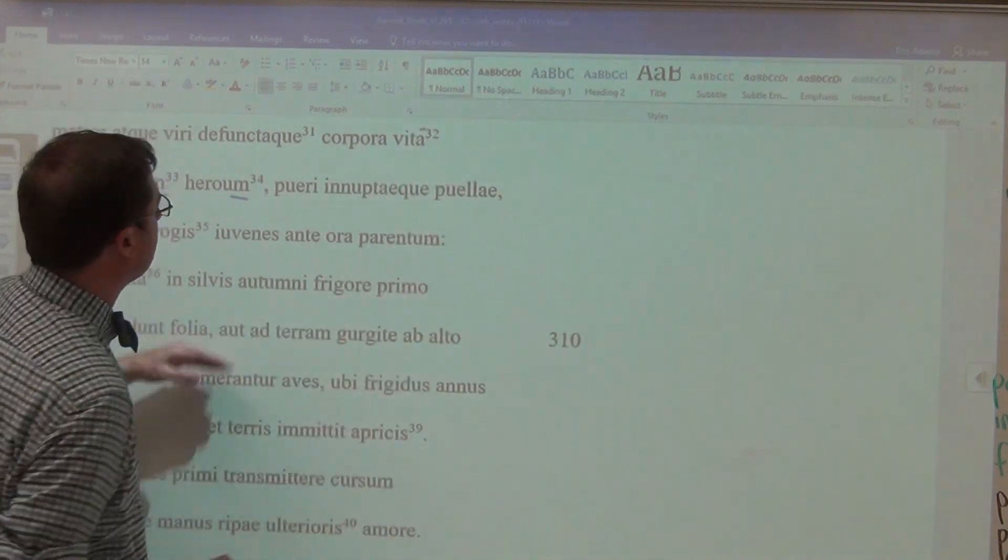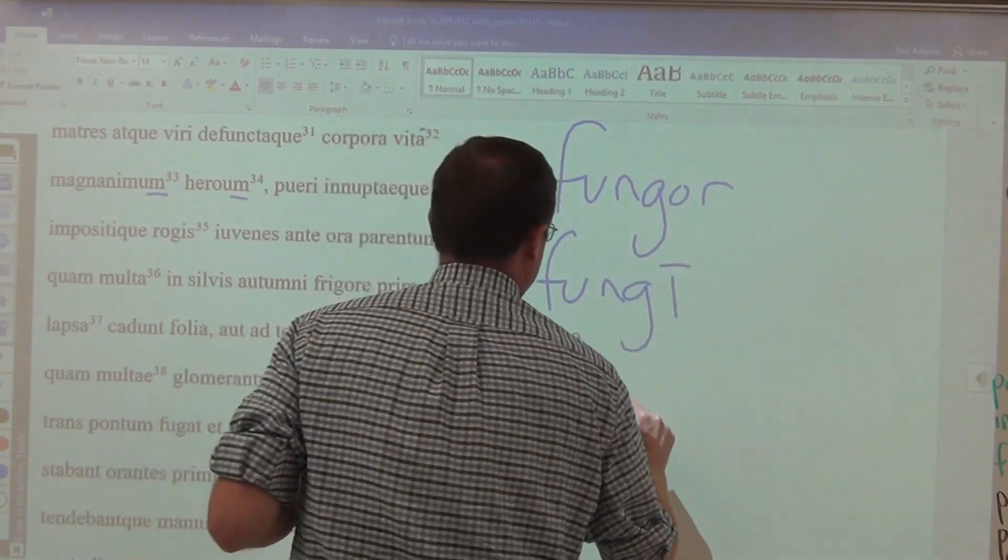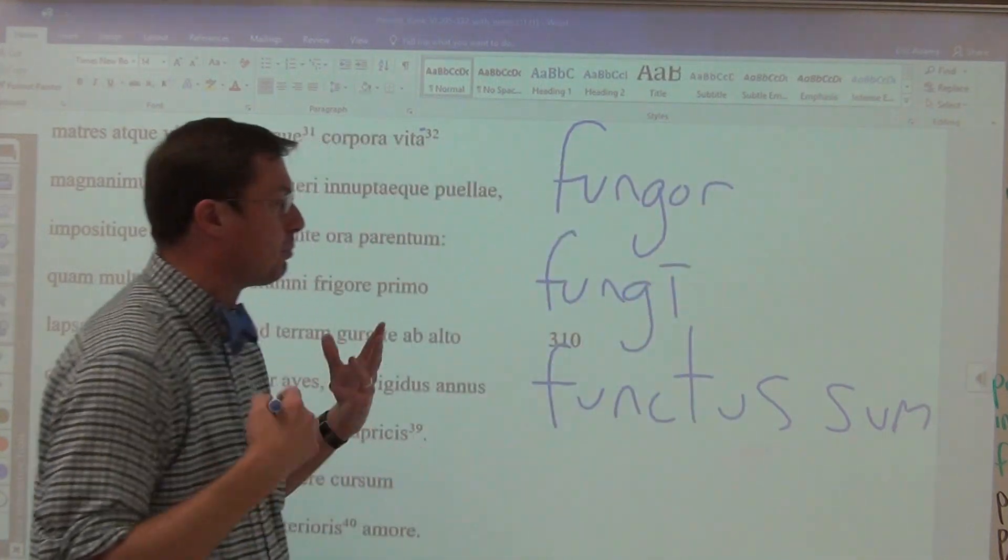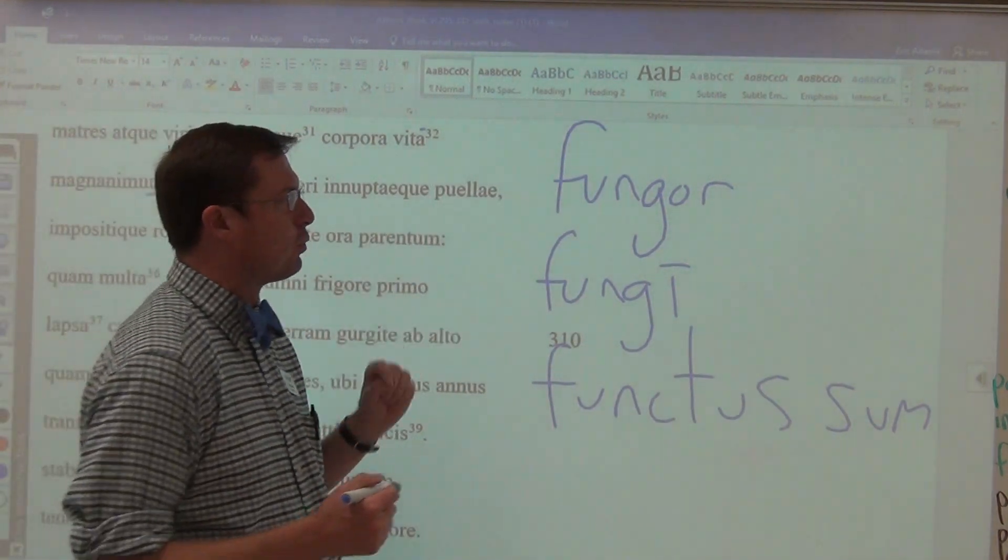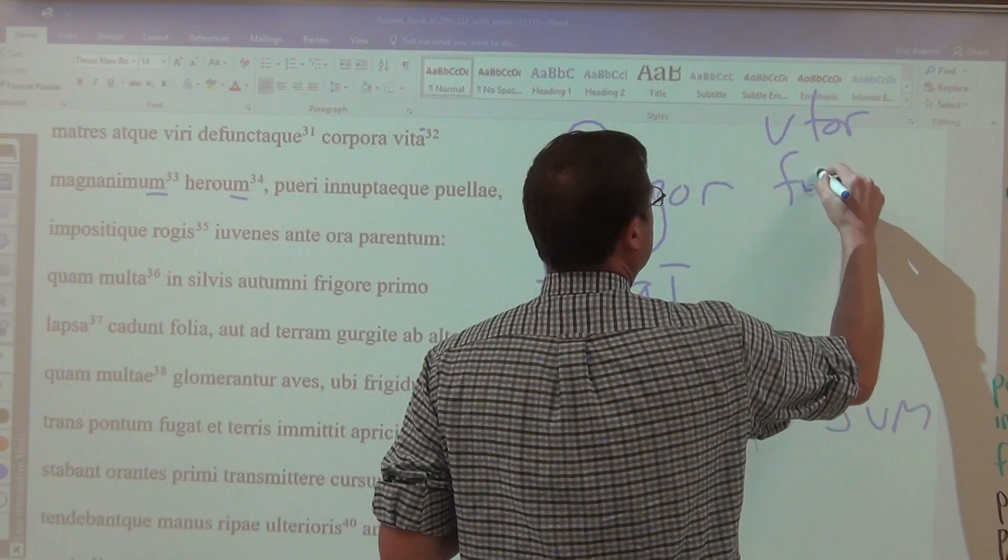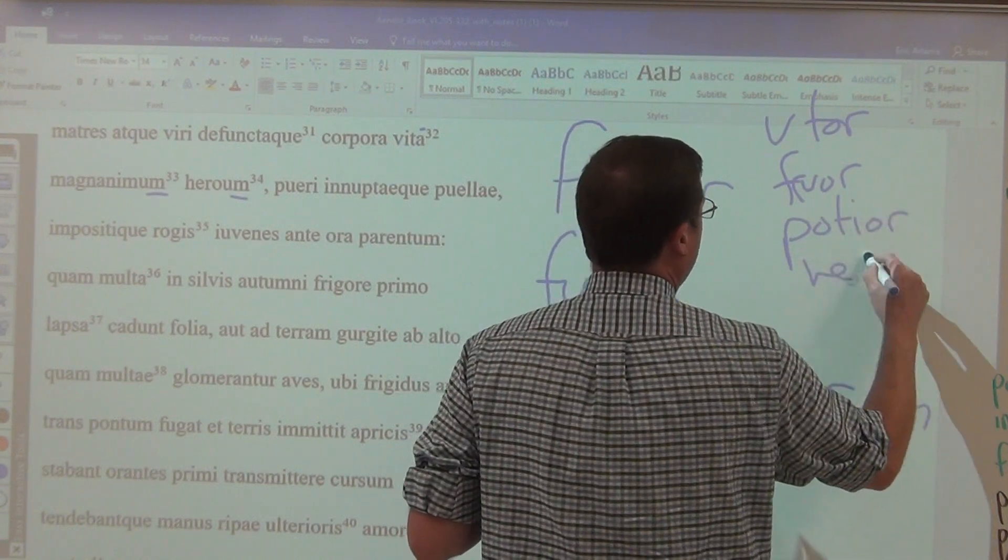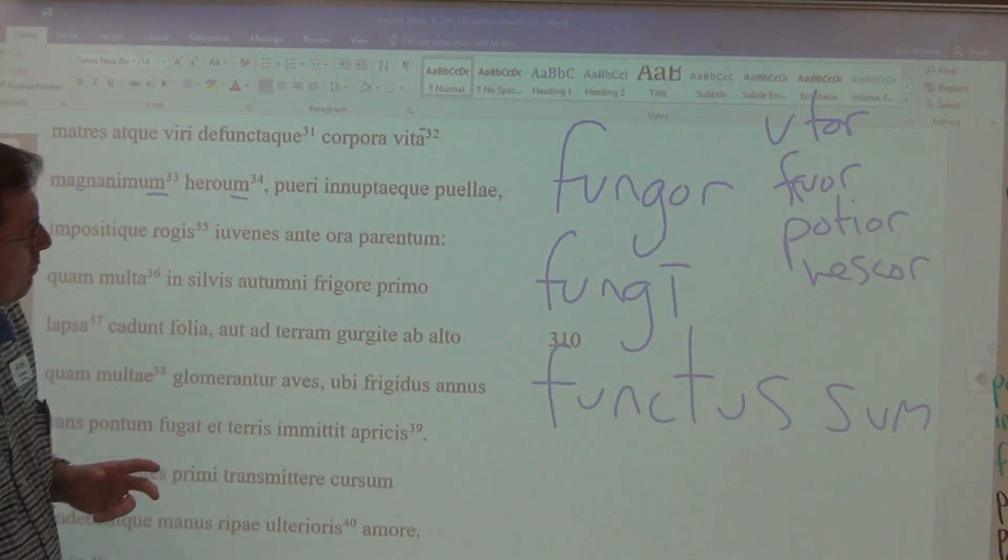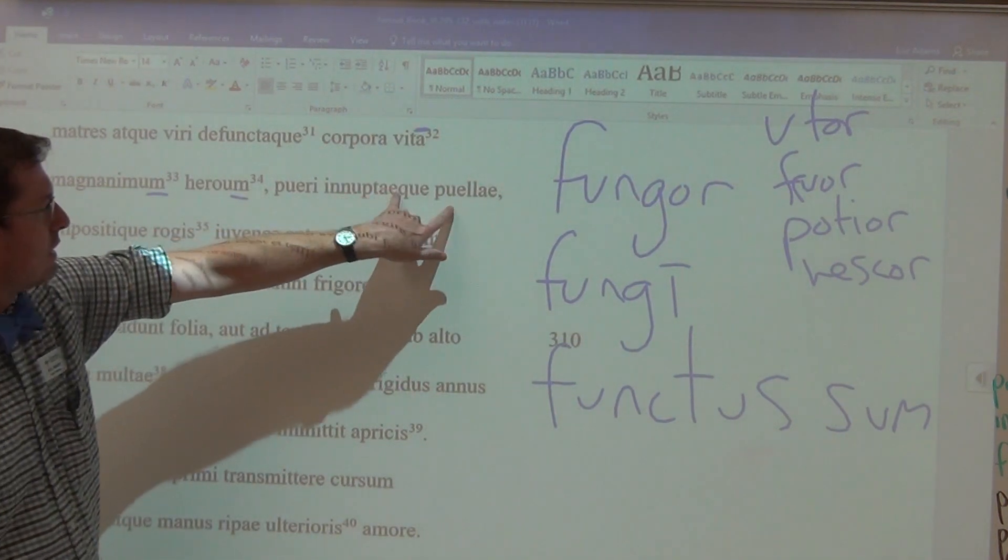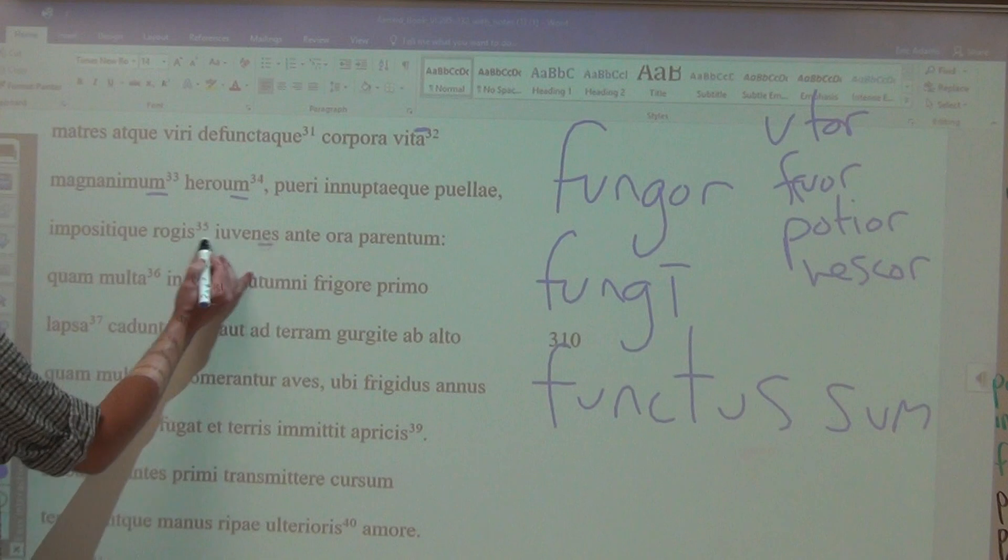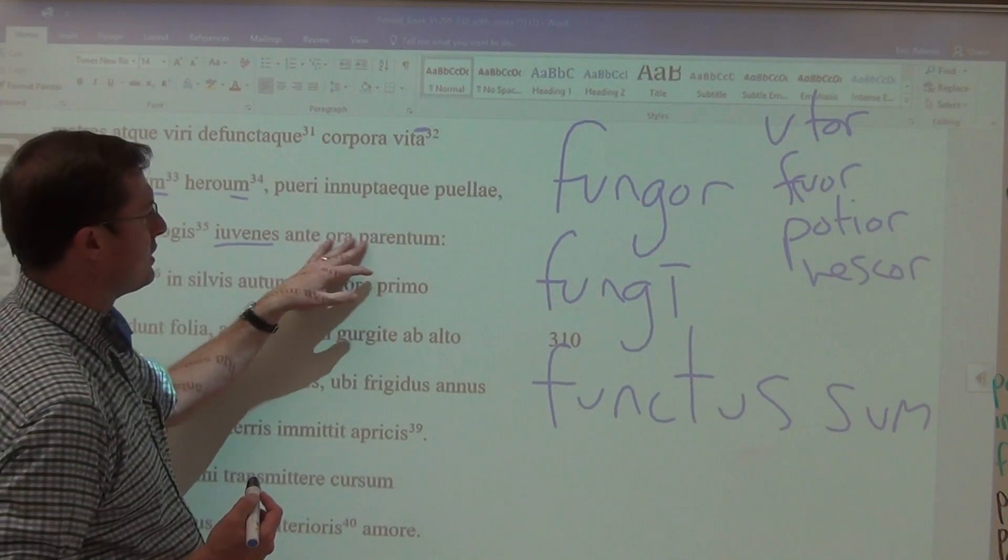And bodies of magnanimous heroes. Magnanimous means great-hearted in the genitive plural. They, those bodies, defunct from their life. Now this is your verb, defuncta, that is fungor fungi functus sum. And it's where we get the word function, and that's what it means, to perform, to function, to carry out. And so de means not to perform, not to function. It is one of those verbs that include utor uti usus sum, fruor frui fructus sum, potior potiri potitus sum, and vescor vesci that would have an ablative object. Boys and unwed girls and youths having been placed on funeral pyres in front of the faces of their parents.